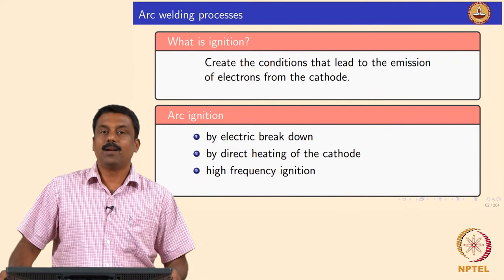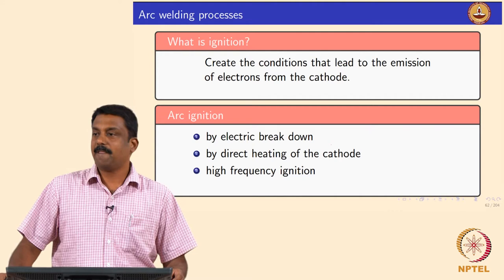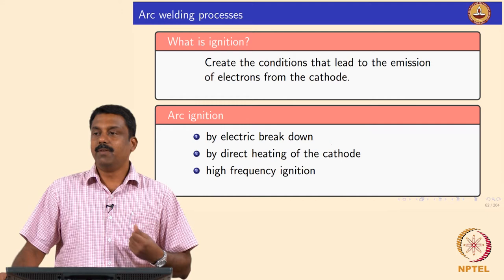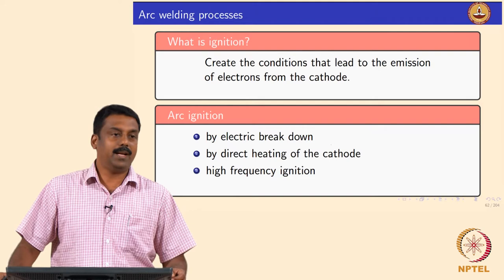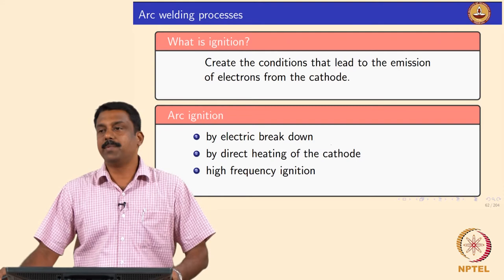Before proceeding, what is ignition? Ignition is a condition that leads to emission of electrons from the cathode. Once you have sustained emission of electrons, these electrons travel into the gas medium and subsequently ionize it further, leading to conduction of the electric field from cathode to anode.